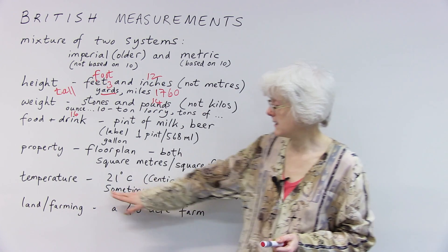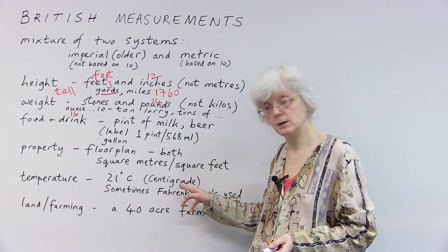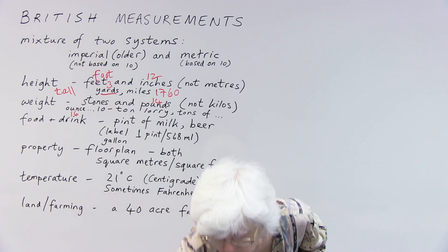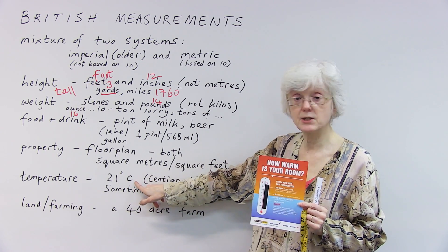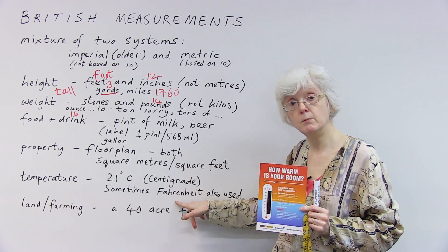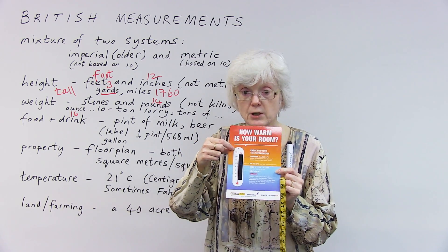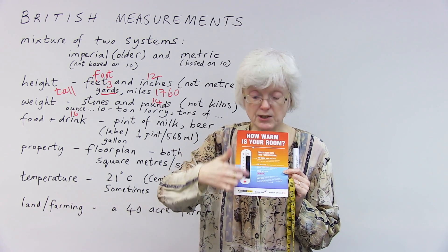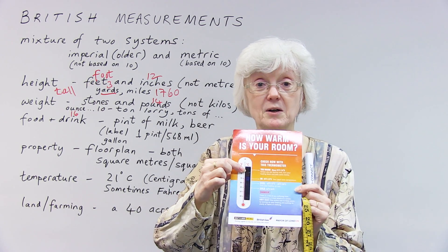And then finally, for temperature, we tend to use centigrade now. So we would say this room, the temperature in this room, which I can tell from my little chart here, is 21 degrees centigrade. But we do sometimes also use the older system, Fahrenheit, and you can see that is actually marked on this chart as centigrade on this side with a heat-sensitive strip on it. And the Fahrenheit is just marked with numbers.